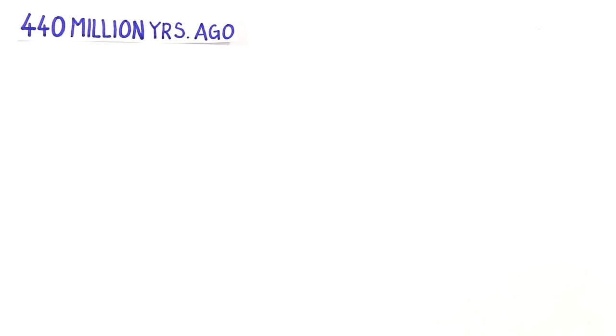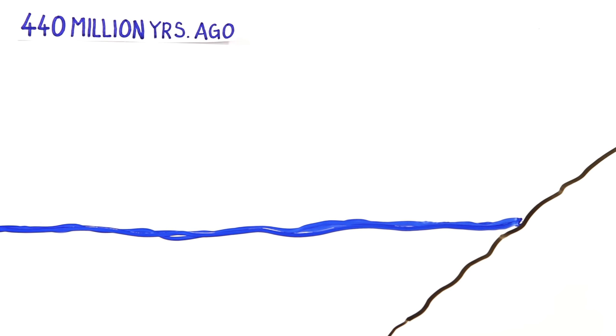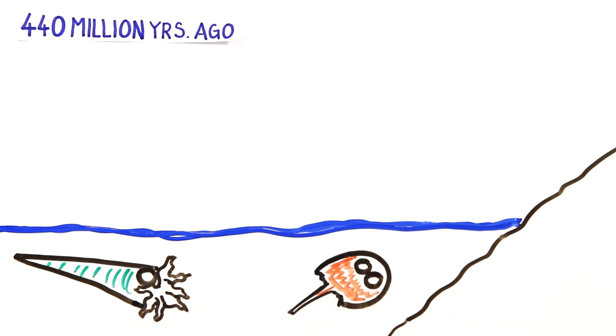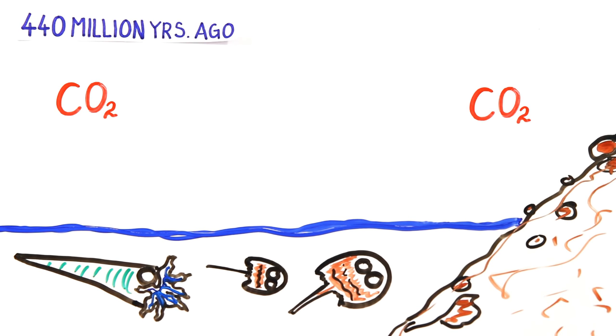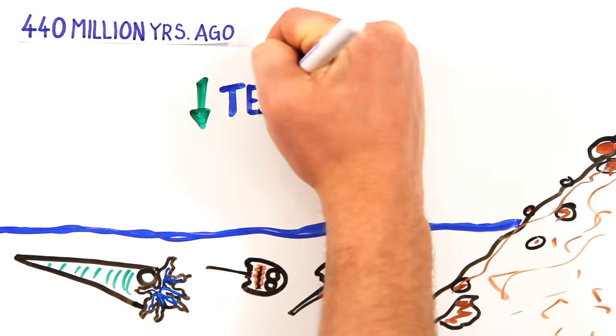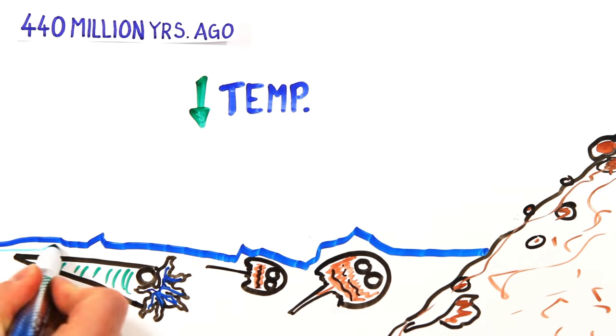440 million years ago was the Ordovician extinction. At that time, most creatures swam or crawled in shallow seas. As newly created volcanic rock was worn down by water and wind, it reacted with carbon dioxide and absorbed it. As a result, carbon dioxide levels dropped, temperatures fell, and water got locked away as ice.